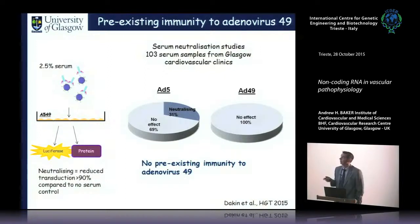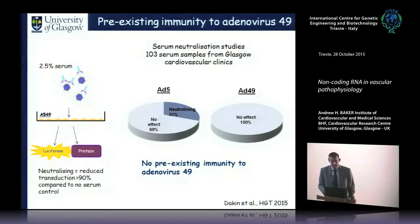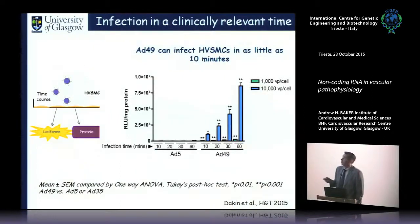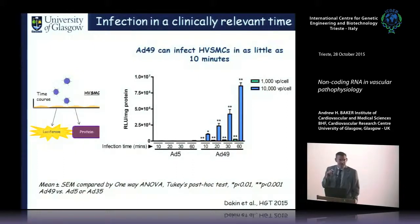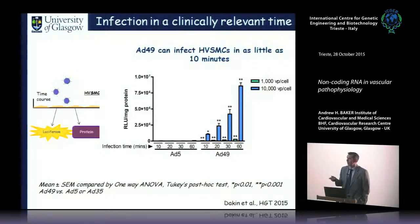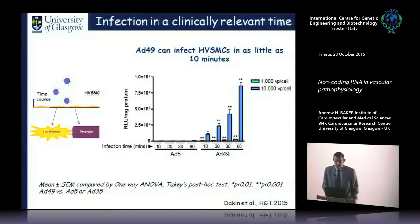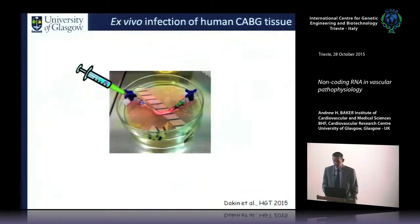One virus we identified is a very rare adenovirus — there are about three papers on it since it was isolated from an HIV patient in Saudi Arabia — but essentially there is no pre-existing immunity to this in any patient we've tested. Switching serotypes immediately circumvents the pre-existing immunity issue. It's also very infective for vascular tissues: comparing AD5 to AD49 at very short exposure times, you get much higher levels of infection.